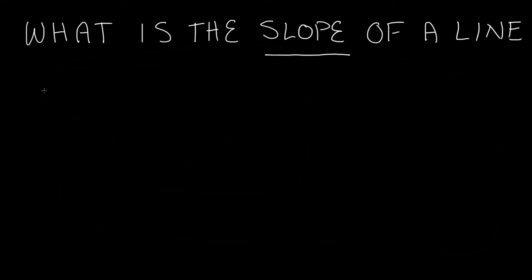Basically, a slope is a way that we can get some information about a line. A slope has a few different properties to it, and the way you want to think about it is that it describes a couple of things.